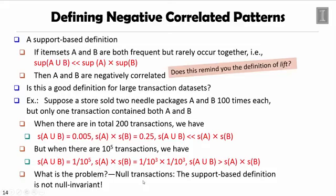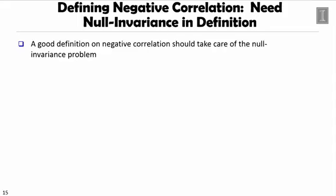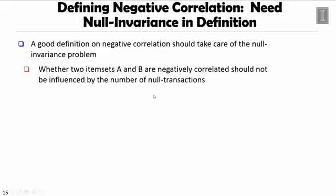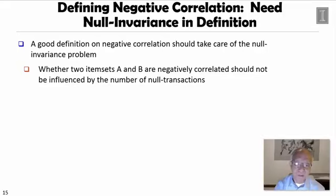The problem actually is null transactions. Because there are so many transactions, they contain neither A nor B. They are null transactions. So we can see a good definition of negative correlation should take care of the null invariance problem. That means when two items as A and B are negatively correlated, they should not be influenced. Whether they are negatively correlated or not, they should not be influenced by the number of null transactions.